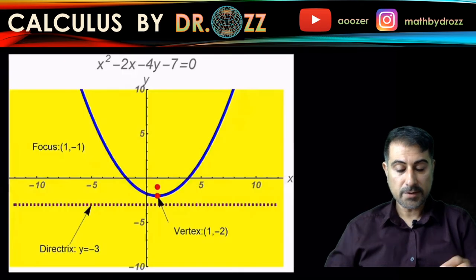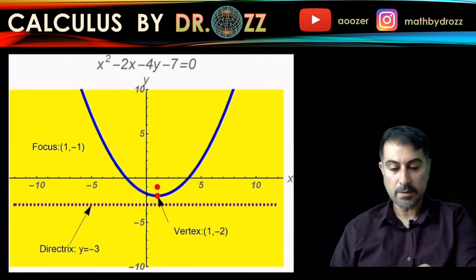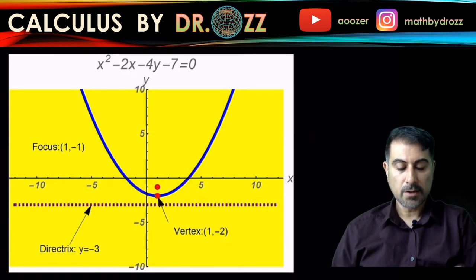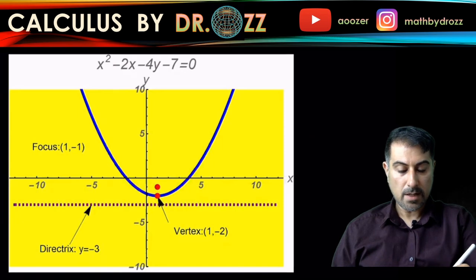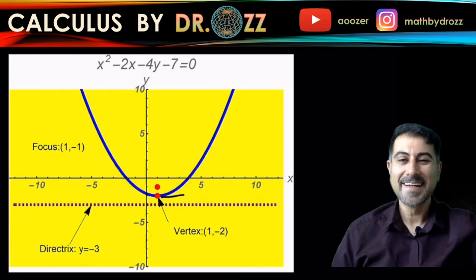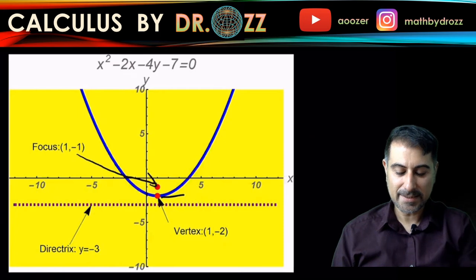Essentially, the vertex is located right here: 1 and negative 2. That's the coordinates for that. It's right here. Then you have the focus. Let me just put a hypothetical arrow here: 1 and negative 1 is the focus, and here is the directrix. As you see, y equals negative 3.